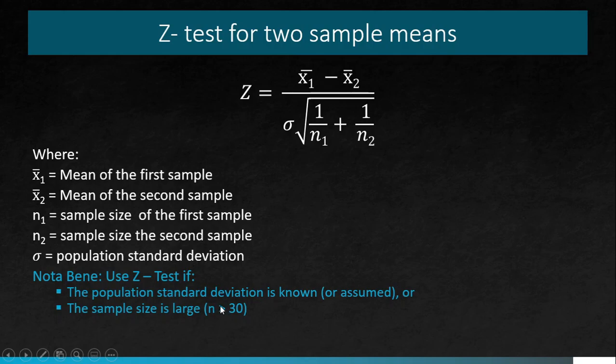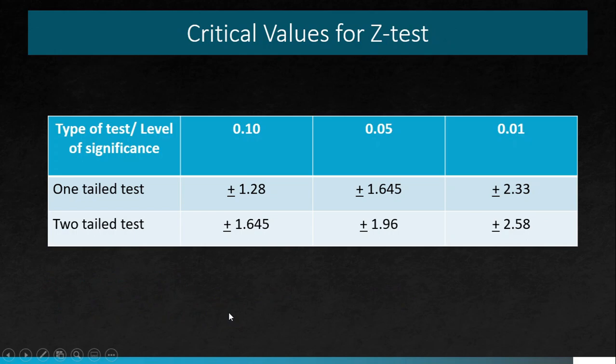Please take note that the sample size condition is greater than or equal to 30. These are the critical values for the Z-test. If you watched the second part of this six-part discussion, we used the same table for critical values, and in that video we also discussed how to identify which critical value to use.